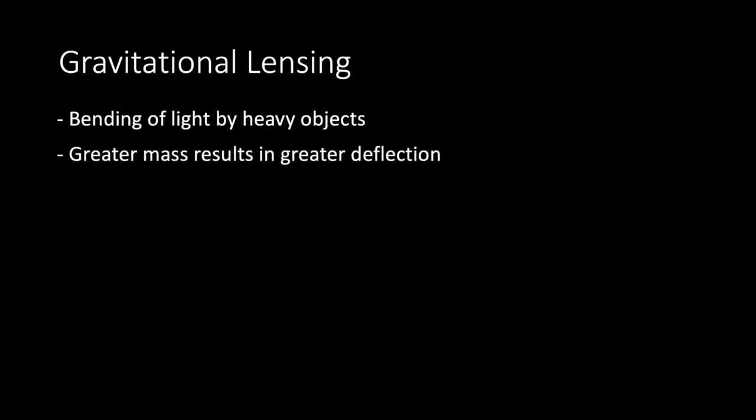Another piece of evidence for the existence of dark matter is called gravitational lensing. Massive galaxies create gravitational fields that distort and magnify light from distant galaxies, which are behind them in the same line of sight. The amount of deflection can be used to calculate the mass of the galaxy.